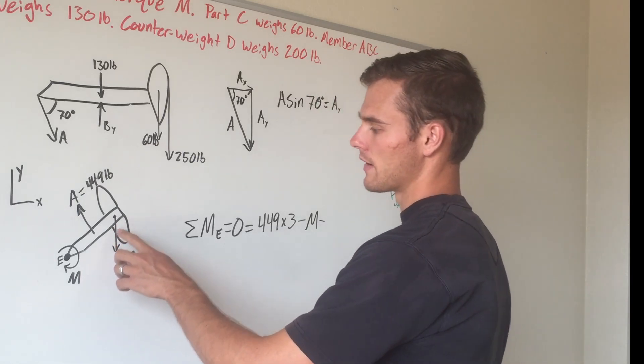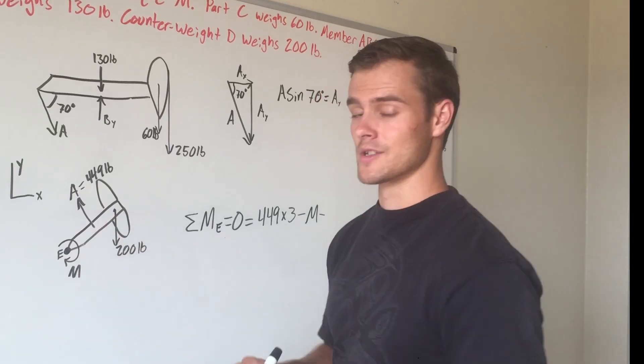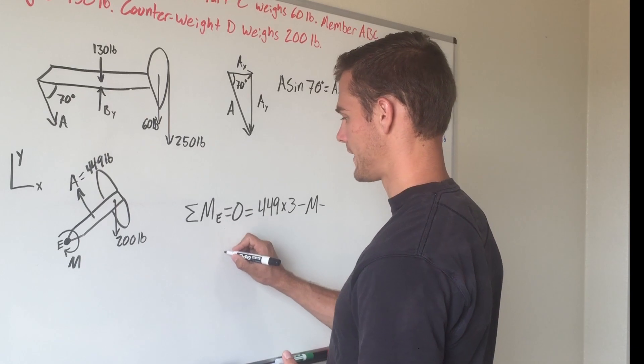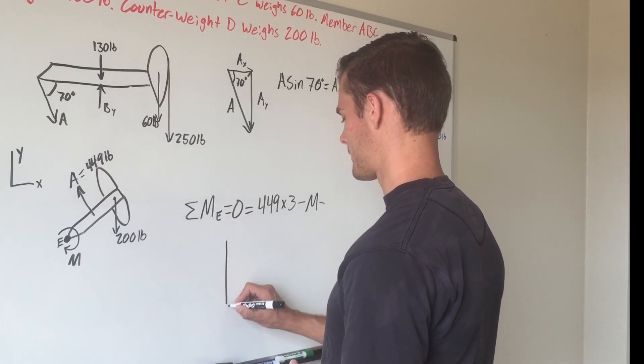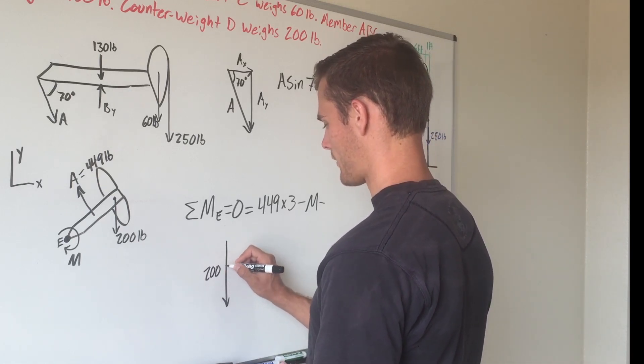But there is a component of this that is not perpendicular to its moment arm, so it's not going to cause rotation. We need to find its component that is perpendicular to that moment arm. We can draw that out like this—this is our 200-pound force.